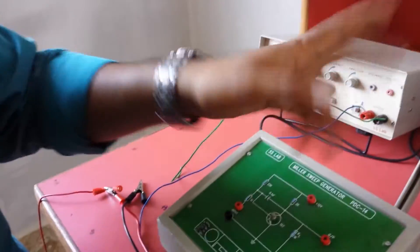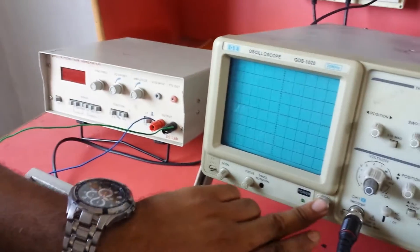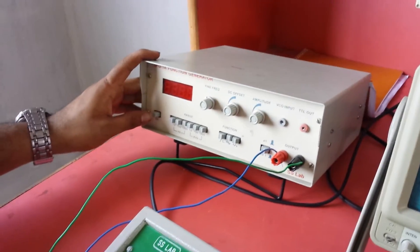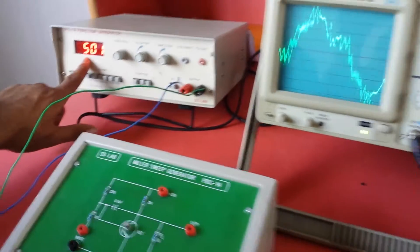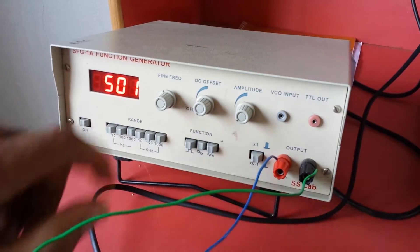Then we gonna switch on these two functions, this power which is one, and this is the another function generator power, this into one. You can see the range is 505, not one.